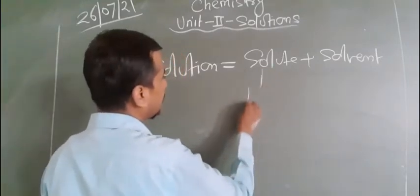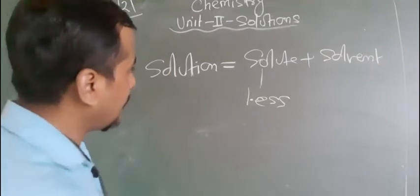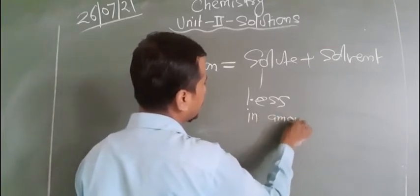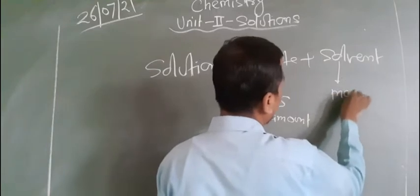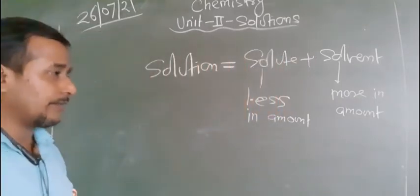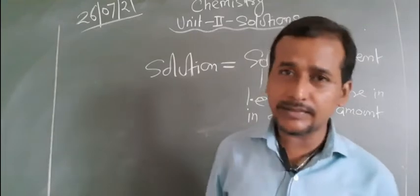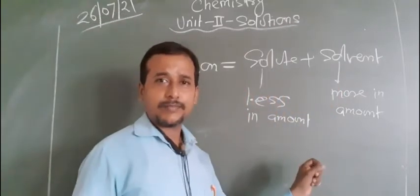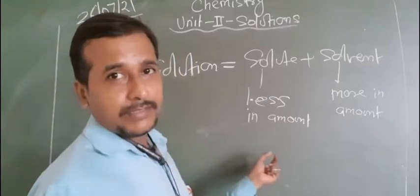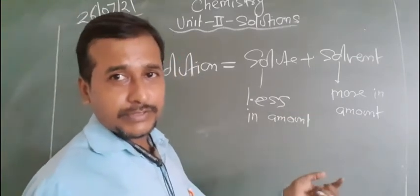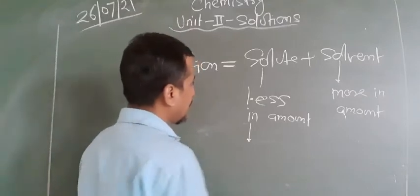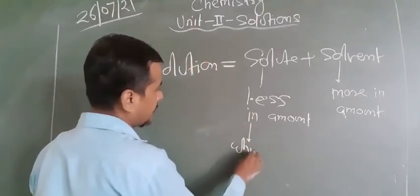So what is solute, basically? It is the component that is less in amount. In a solution, if it is less in amount, it is called the solute. In the case of a sugar solution, the solvent may be less but the solute is more — that's why it becomes syrupy. But always, solute means the component of the solution which dissolves.